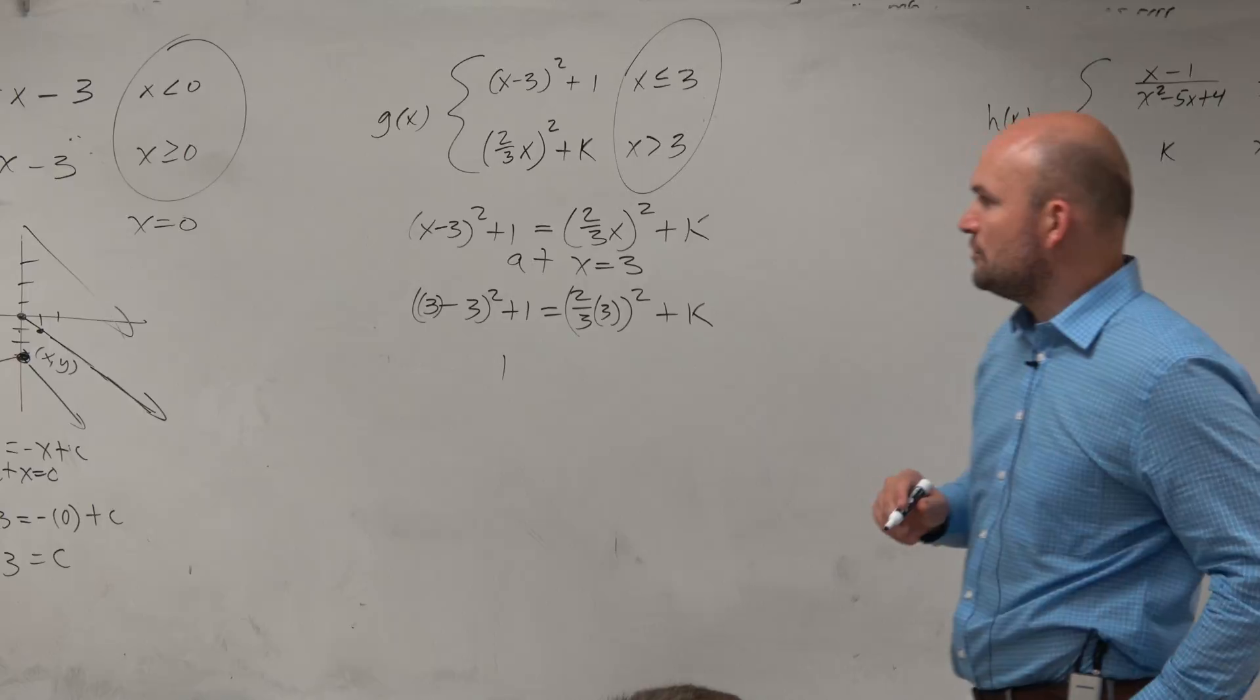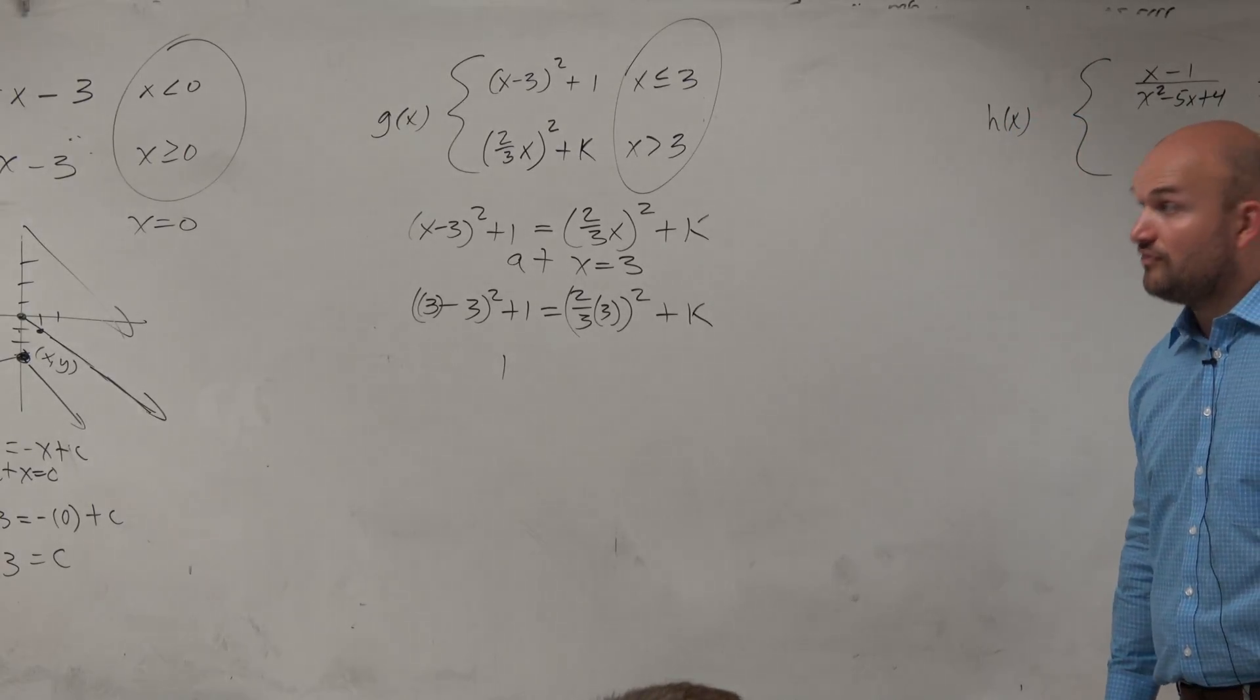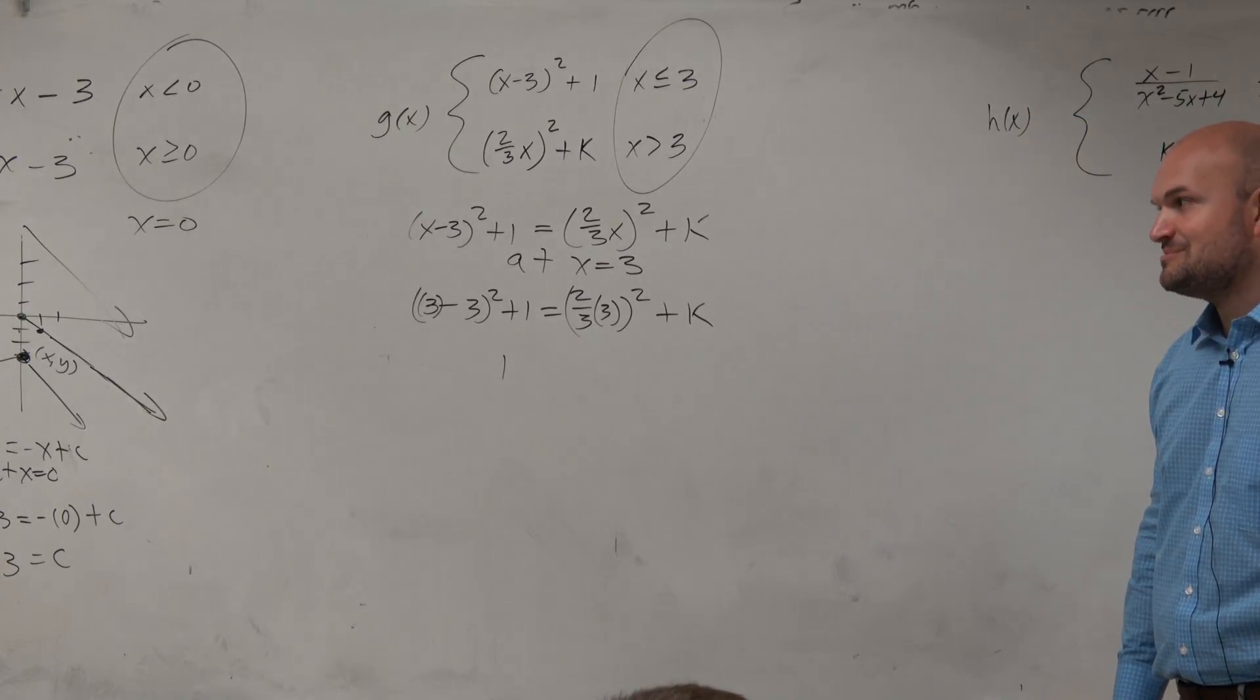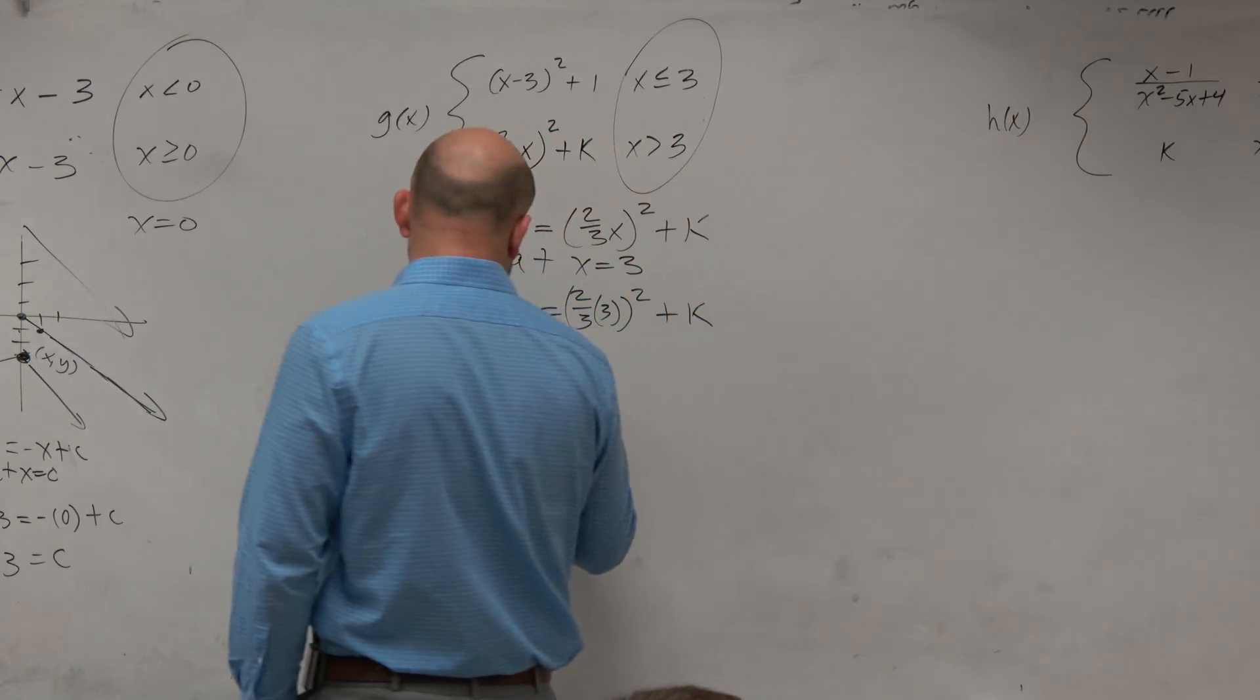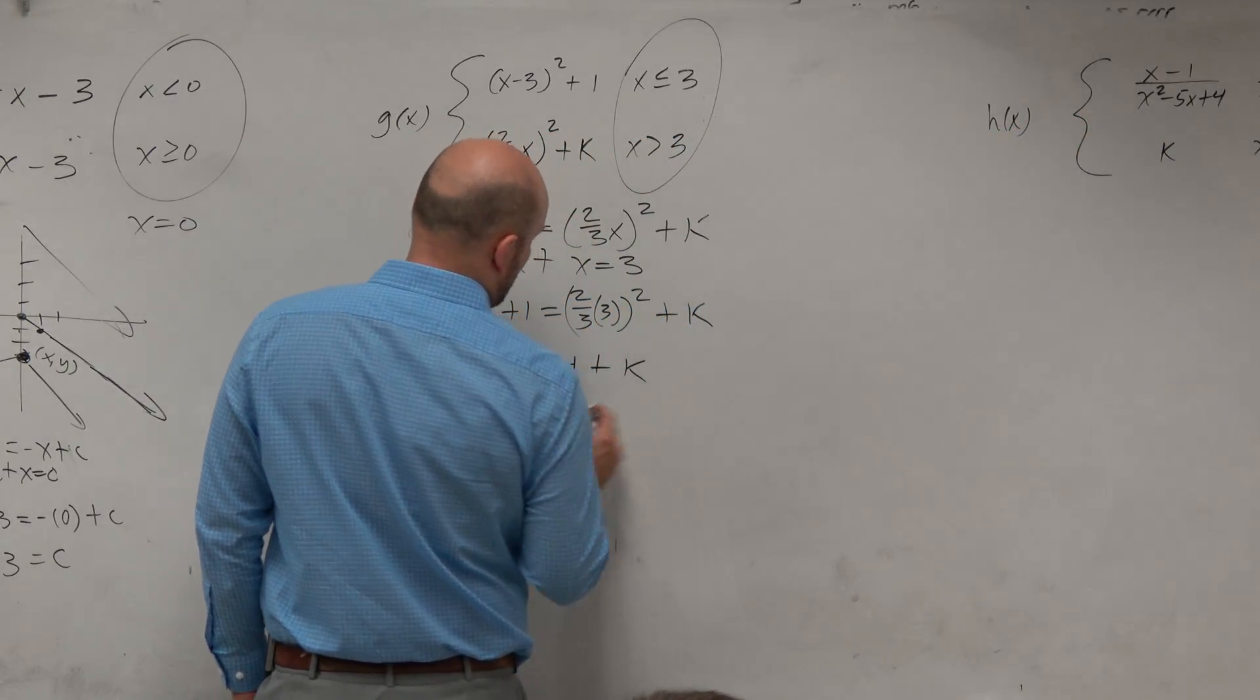3 times 2 thirds is going to equal 4. I'm sorry, 3 times 2 thirds is going to equal 2. 2 squared is equal to 4 plus k.